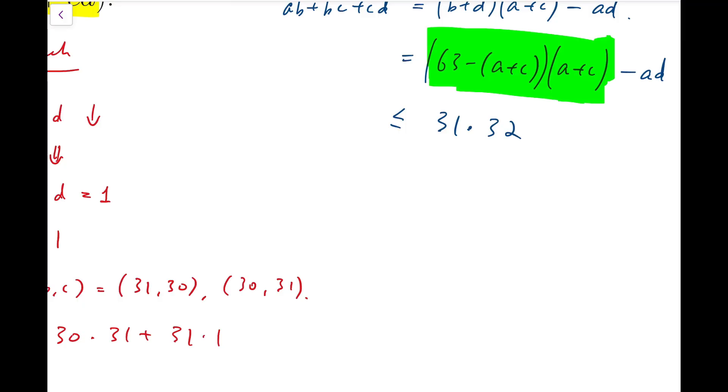And for the other part, because we are subtracting a number, it's equivalent to find the minimum of AD, and that is 1 times 1. And this maximum is 991.